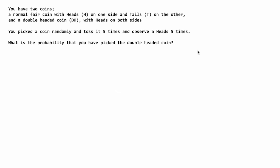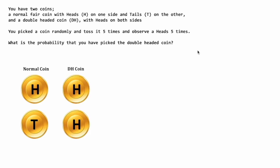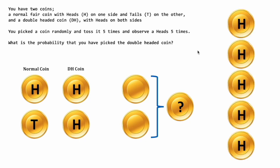You have two coins: a normal fair coin with heads on one side and tails on the other, and a double-headed coin with heads on both sides. You pick a coin randomly and then toss it five times, and you observe a head five times. Knowing this, what is the probability that you have picked the double-headed coin?